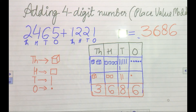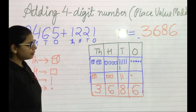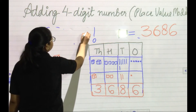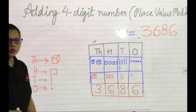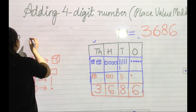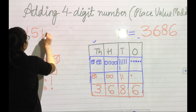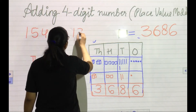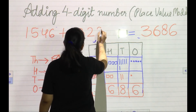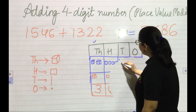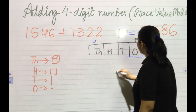We have nothing else to do except drawing the model and adding them up — simple! Now next question: I will be giving you 15 counts to solve it. The question is 1546 plus 1322. You have to add these two numbers using the place value block model. Start adding!